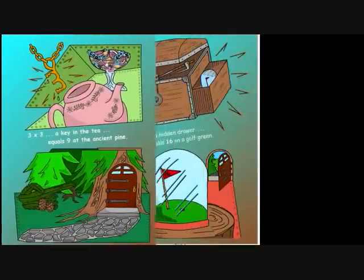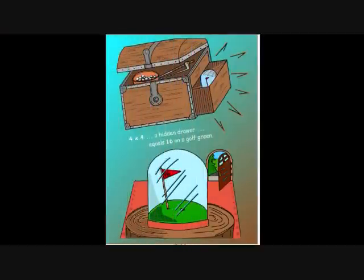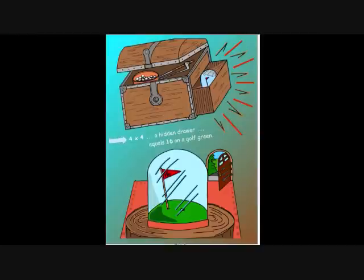And when they went in, they found a chest with golf clubs and a golf ball, and a hidden drawer with a globe inside. Taking the globe out and looking at it, they could see a golf green at hole sixteen. Four times four, a hidden drawer, equals sixteen on a golf green.